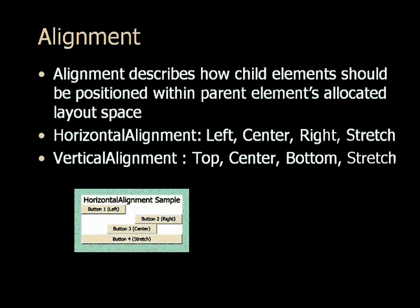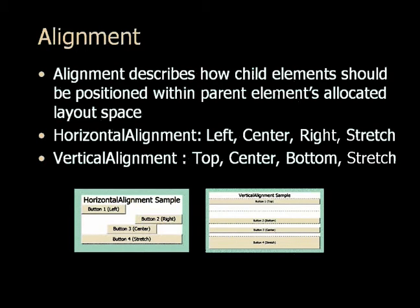Here's an example of using horizontal alignment. Button 1 has its horizontal alignment set to left, button 2 to right, button 3 to center, and button 4 is stretch. So button 1 is anchored to the left of the parent, button 2 to the right, button 3 in the middle, and button 4 will resize itself to fill all of the available space. For vertical alignment: button 1 is on the top, button 2 on the bottom, button 3 in the center, and button 4 stretches vertically to take up all of the available space.